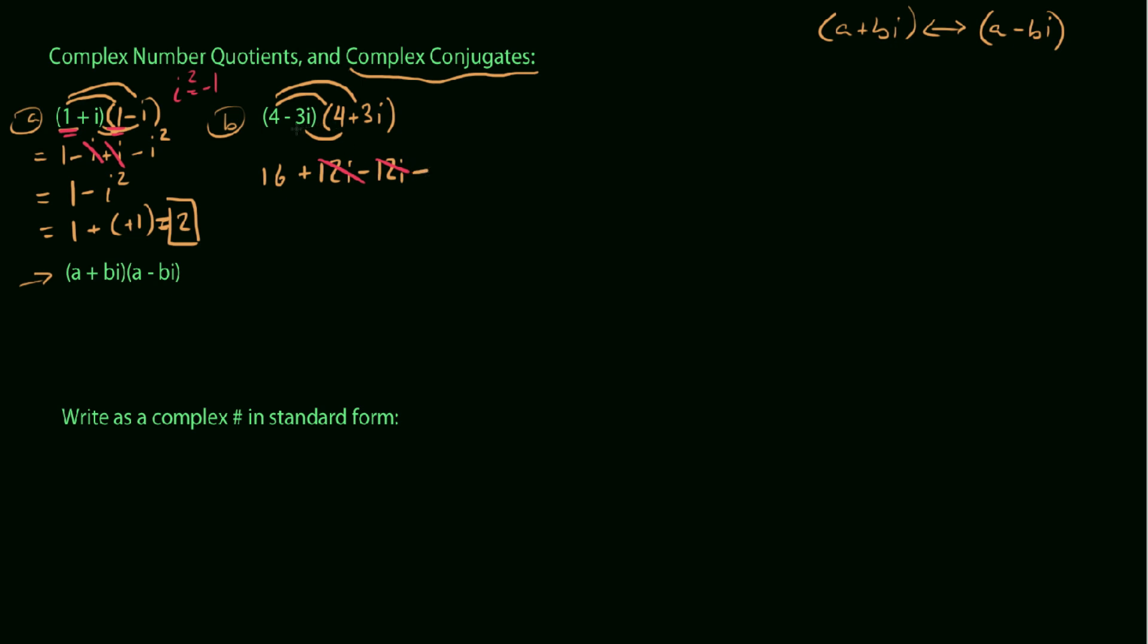4 times positive 3i is 12i. You'll notice here that we get our negative 12i, and so essentially those eliminate one another. And then we get minus, always minus, since these are conjugates here. When you multiply these last two terms, one positive, one negative, you always get a difference. And then we get 9i squared.